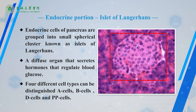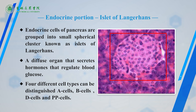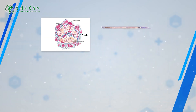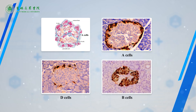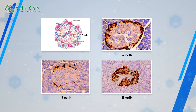The islets vary in size according to the number of cells present and are rich in fenestrated capillaries. Three main cell types can be distinguished by Mallory-azan staining: A cells, B cells, D cells, and PP cells.